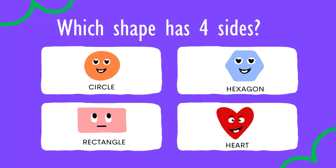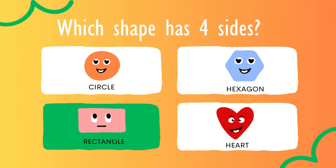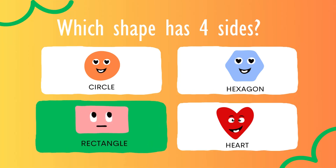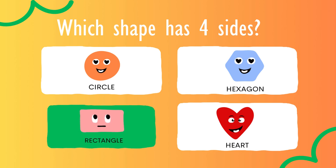Which shape has five sides? Rectangle. Rectangle has four sides.